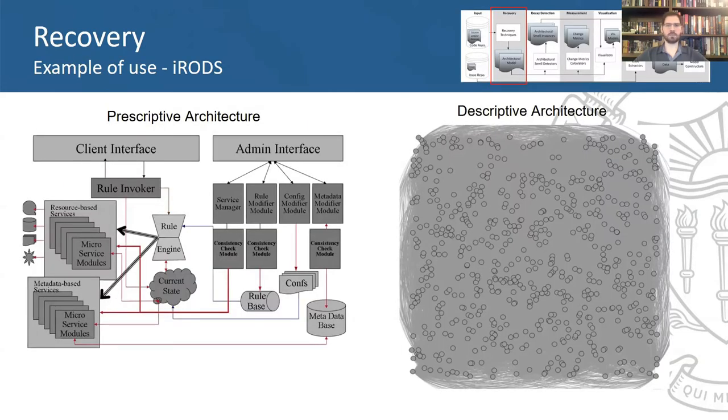The first task performed by Arcade is architectural recovery, the extraction of a software system's as-implemented architecture, that is, its descriptive architecture. This is important because the as-documented or prescriptive architecture might be unreliable for reasons such as obscuring certain implementation details, not being kept up to date, or just the challenges of tracing implementation changes back to the documentation.